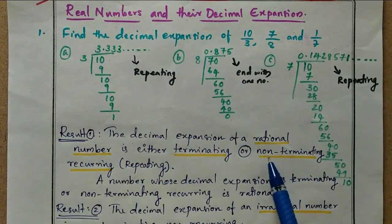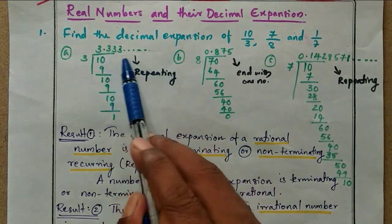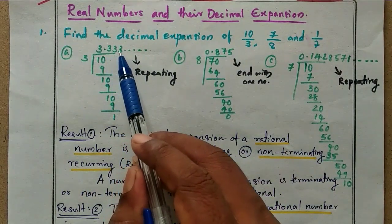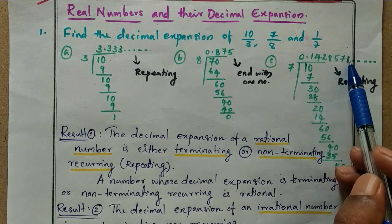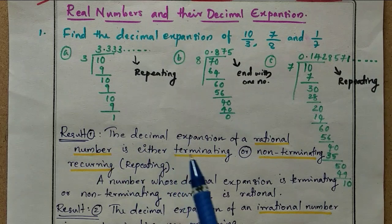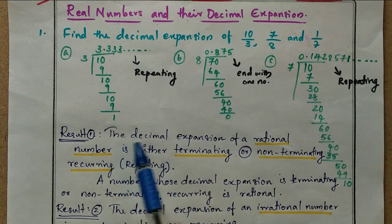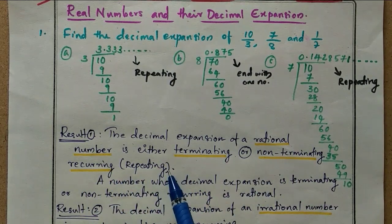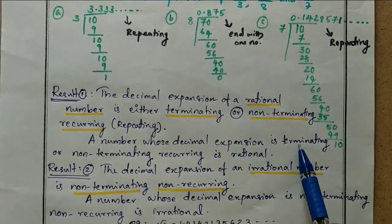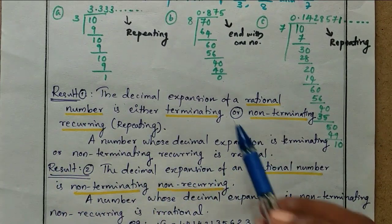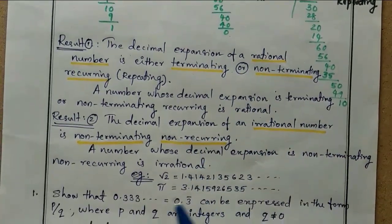The first case and the third case are non-terminating recurring, meaning they do not end and they repeat. The reverse is also correct: a number whose decimal expansion is terminating or non-terminating recurring is a rational number. That is the reverse of this first result.